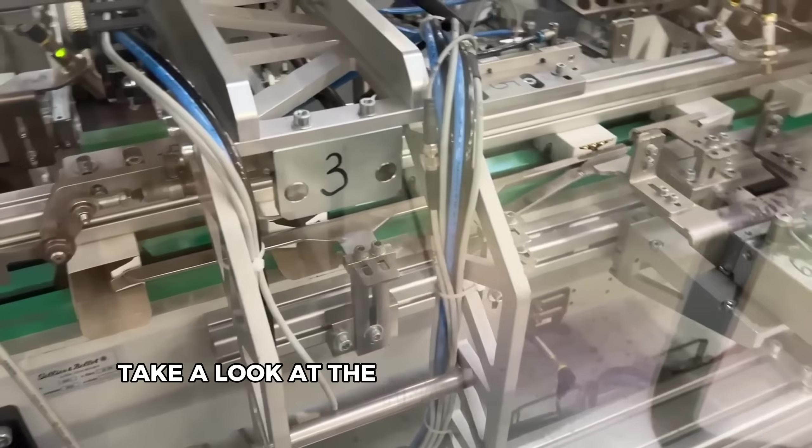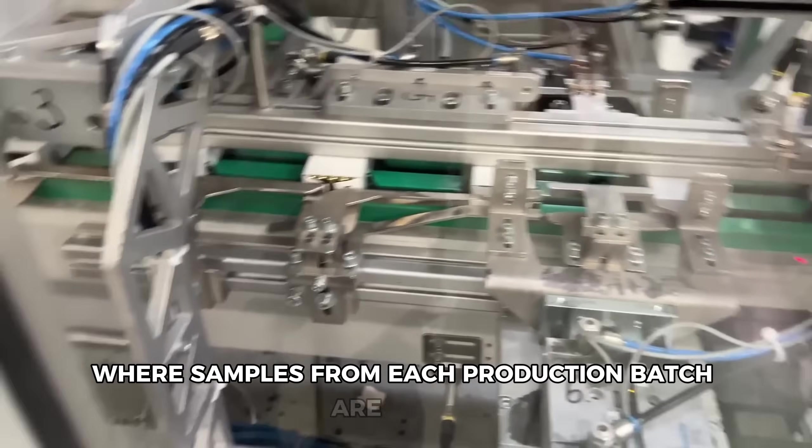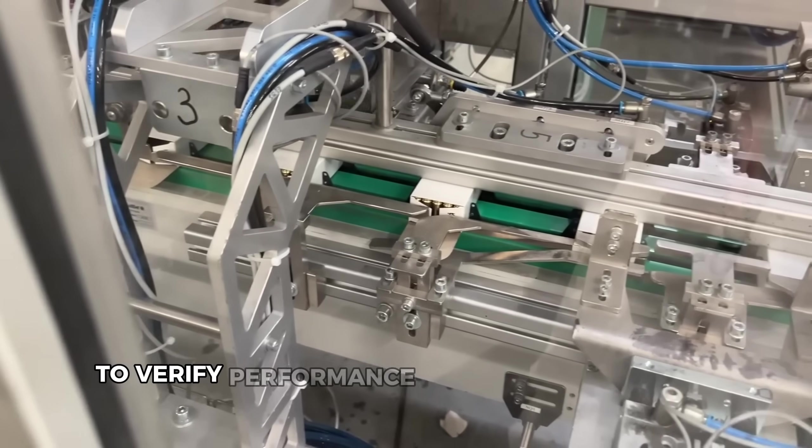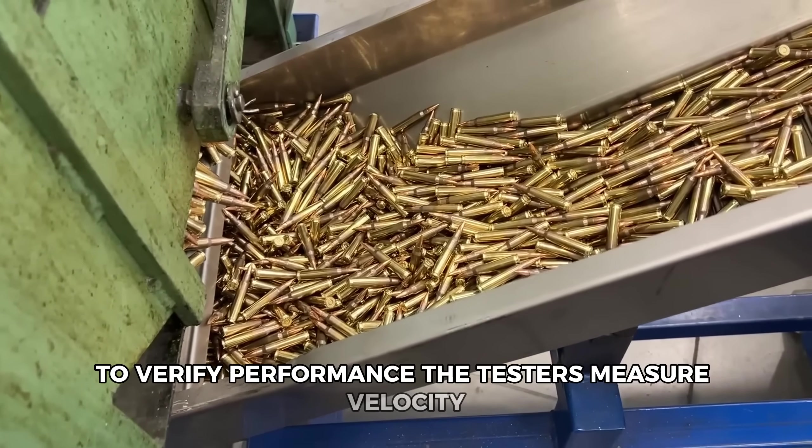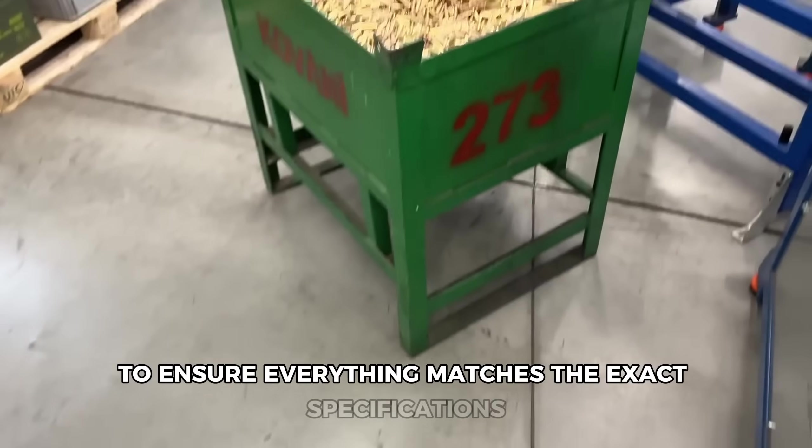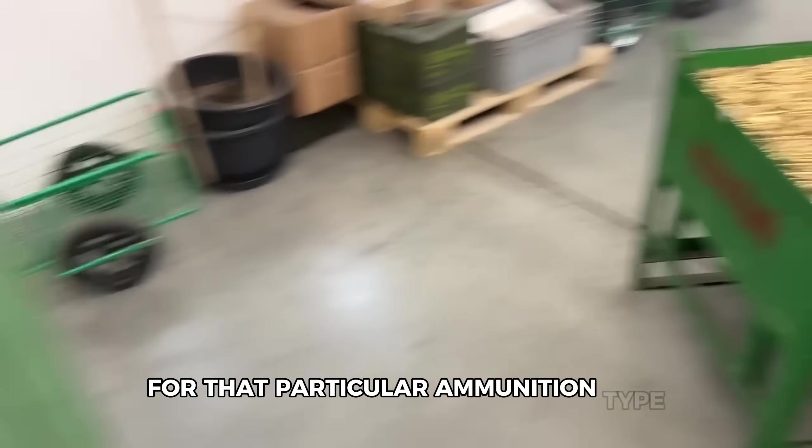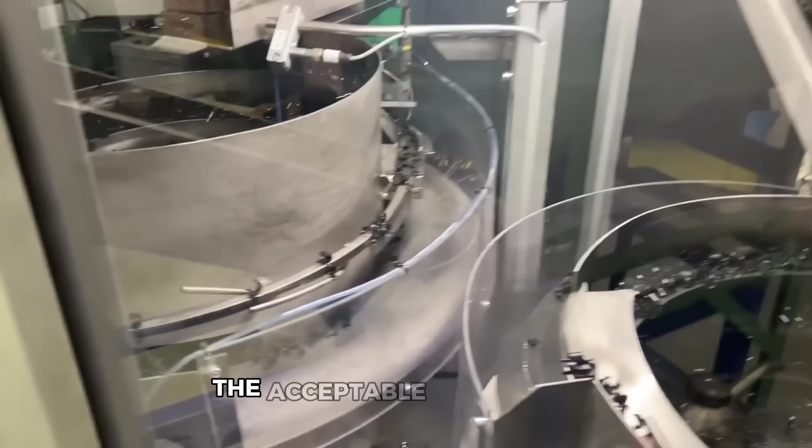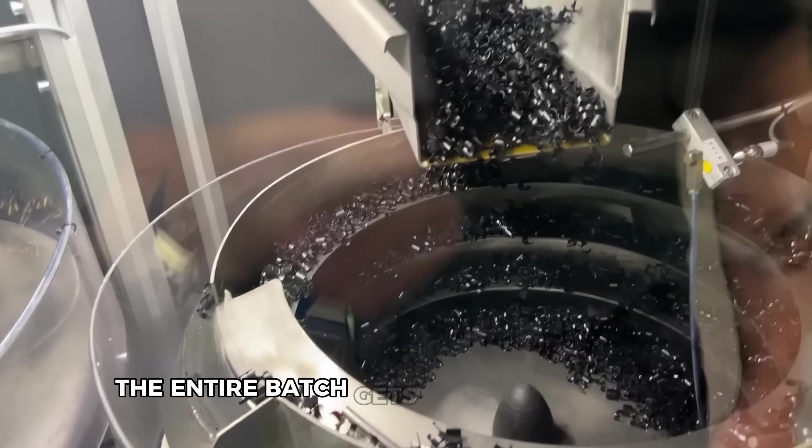Take a look at the final quality control station where samples from each production batch are test fired to verify performance. The testers measure velocity, accuracy and pressure curves to ensure everything matches the exact specifications for that particular ammunition type. If anything falls outside the acceptable parameters, the entire batch gets flagged for review.